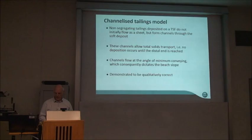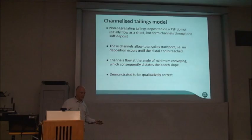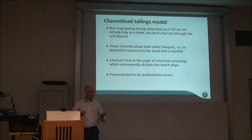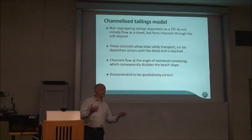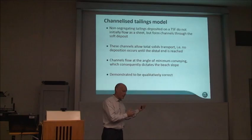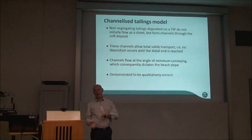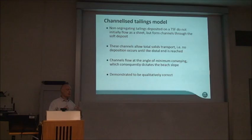We also assume total transport of solids — what goes in one end comes out the other — because if not, you get a varying slope. The key idea is that channels flow at what we call the minimum conveying slope or minimum conveying angle. In pipeline transport, we talk about a minimum conveying velocity for a given pipe diameter and particle and rheological conditions. In channels, we don't have a minimum conveying velocity, just a minimum conveying slope — a particular slope below which material won't flow and will collapse.